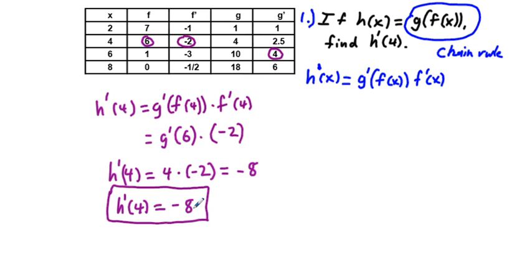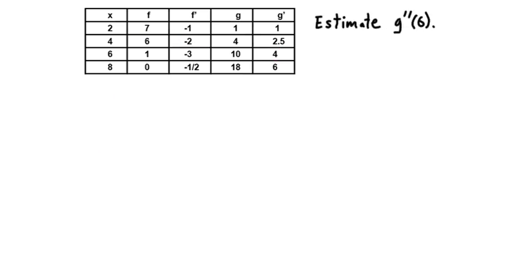This is probably the most difficult of the four problems. The next one: estimate g double prime of six. We have g prime for different values in the table. To estimate g double prime, we go to another level that doesn't exist directly, but this is analogous to our average rate of change situation. g double prime can be estimated as the average rate of change relative to g prime.